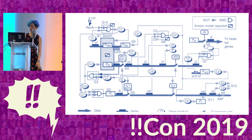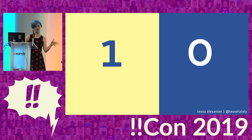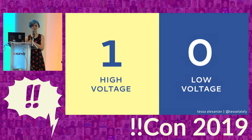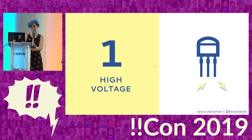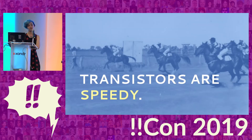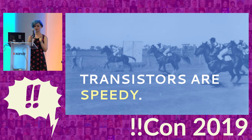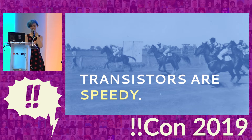So let's talk a bit about Boolean logic. We got our ones, our zeros. Inside of a computer, that kind of means we have high voltage and low voltage. We are passing around this high voltage and this low voltage using transistors. Transistors are great — let's talk about why. Transistors are really fast. Even back when we were using electromechanical relays in the 1930s and 40s, those switches could switch back and forth about 50 times per second. But transistors, the ones that we have today, can switch back and forth billions of times a second. They're incredibly speedy.